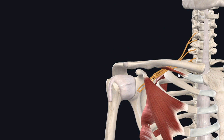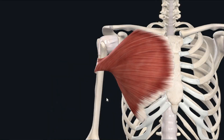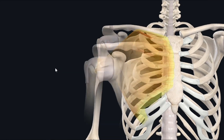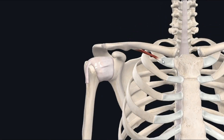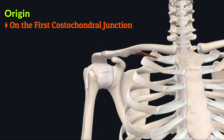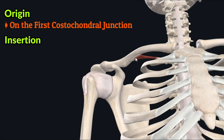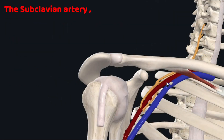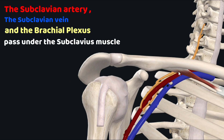The third muscle of the pectoral region is the subclavius muscle, a small muscle that lies underneath the pectoralis major. It originates at the first costochondral junction, then passes upward and laterally to insert in the subclavian groove on the inferior surface of the middle third of the clavicle. The subclavian artery, subclavian vein, and brachial plexus all pass under the subclavius muscle.